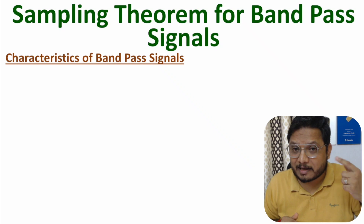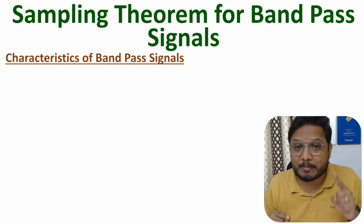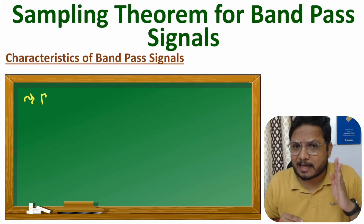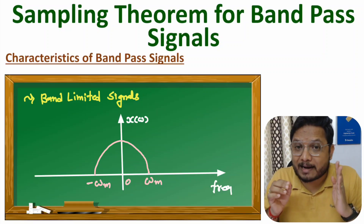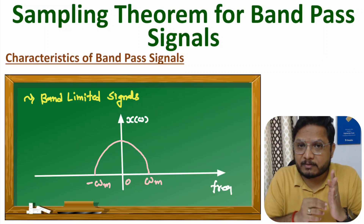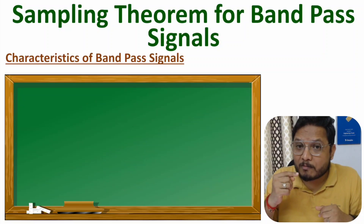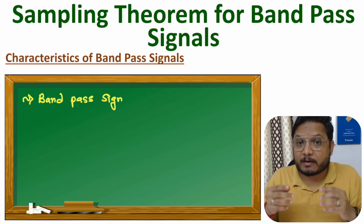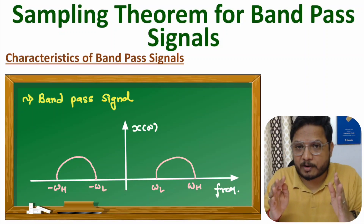In my earlier videos, I have discussed the sampling theorem for band limited signals. When you talk about band limited signals, it has frequencies from zero to maximum — that is, from zero to FM. When you talk about band pass signals, that is having a frequency range from the lower cutoff frequency to the higher cutoff frequency.